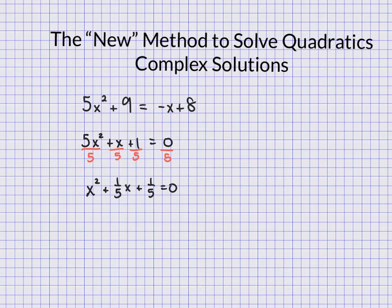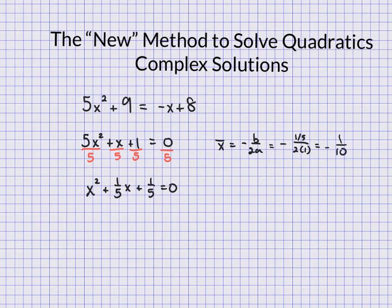Now what we want to do is find out what x-bar is. Remember that x-bar is essentially the axis of symmetry equation, which is the opposite of b over 2a. So now the opposite of b, and b in this case is one-fifth, all over 2 times 1. So in the end here we get negative one-tenth.